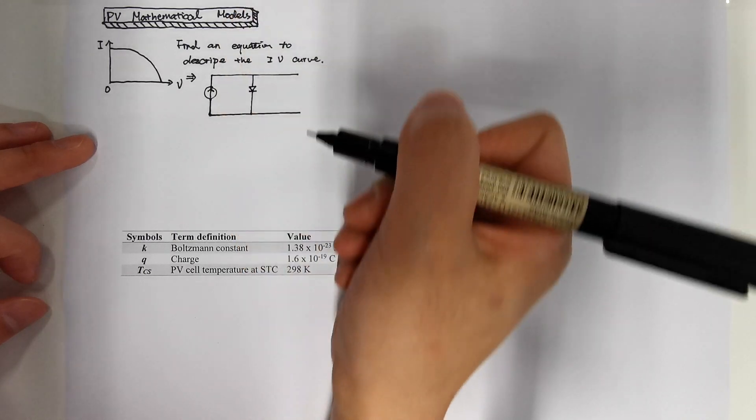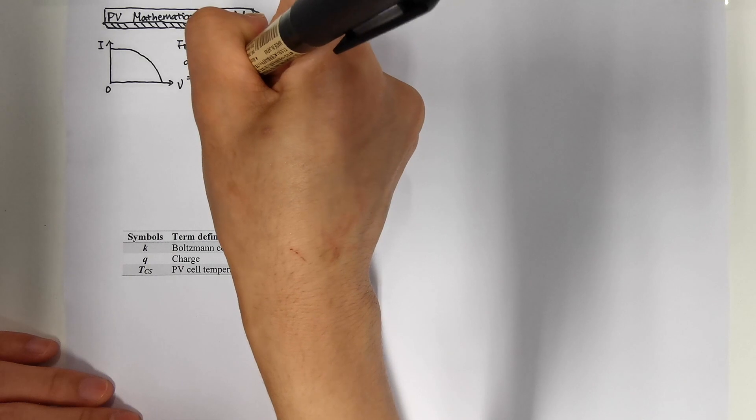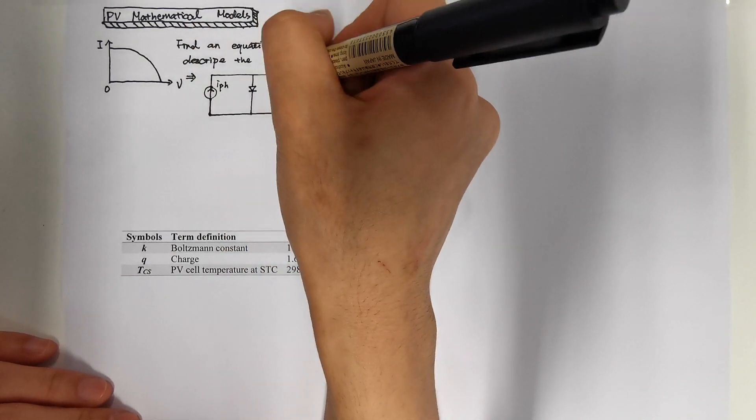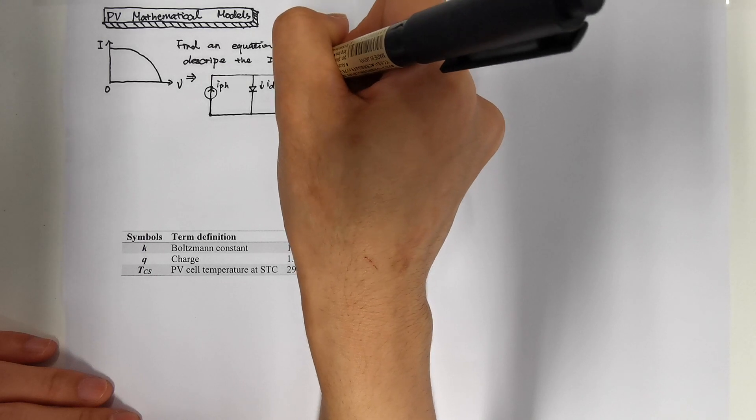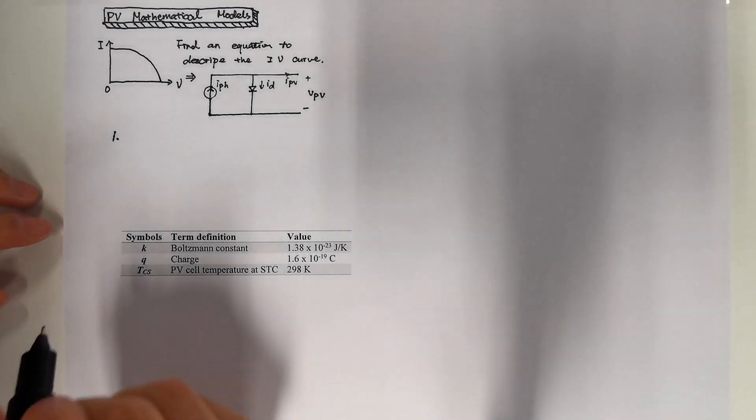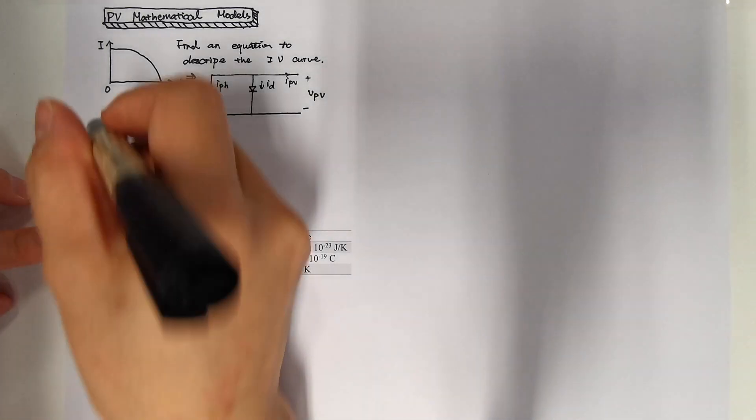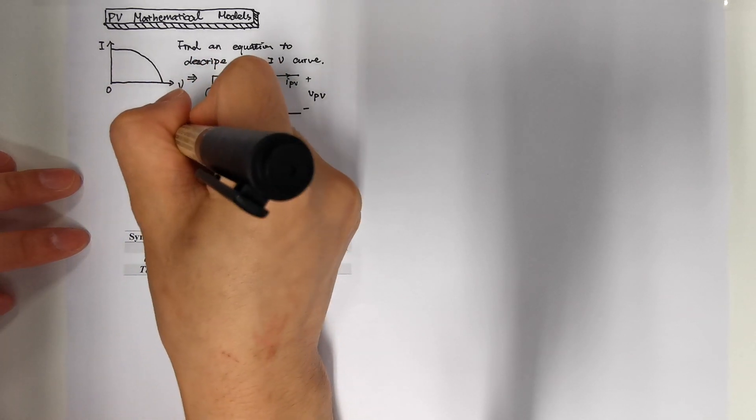The PV mathematical model is to find an equation to describe the IV curves. As PV cell is constructed from silicon PN junction, a diode model is used to represent the PV cell. A very simple model now we are introducing called ISDM model, which means ideal single diode model.